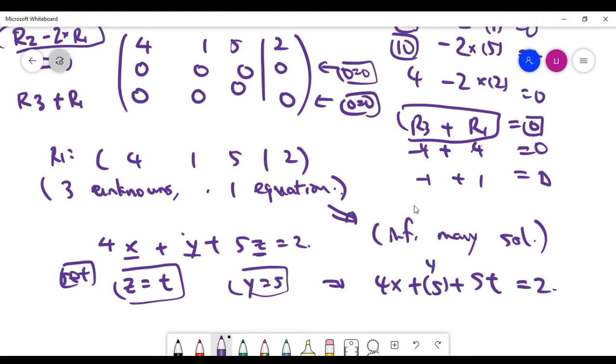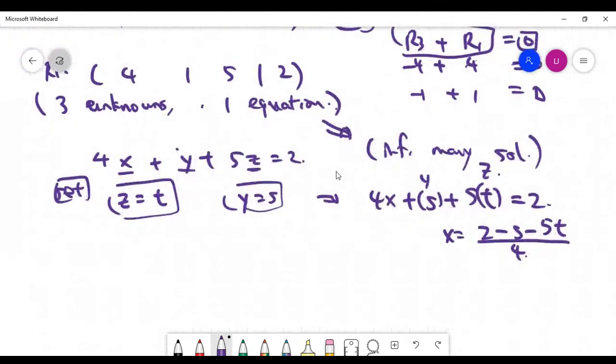So in that case, we have an equation 4x plus s plus 5 times t equals 2. You see, this one is y, this one is basically z. Basically, x is what? x is 2 minus s minus 5t divided by 4, right? So it means I write the solutions down now.